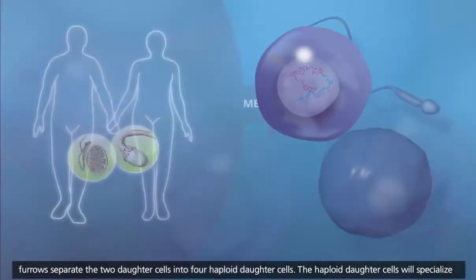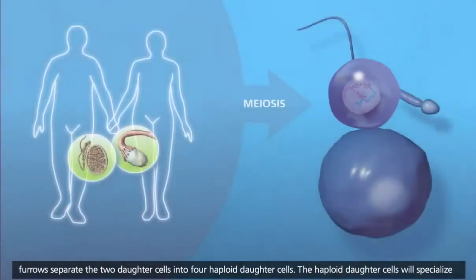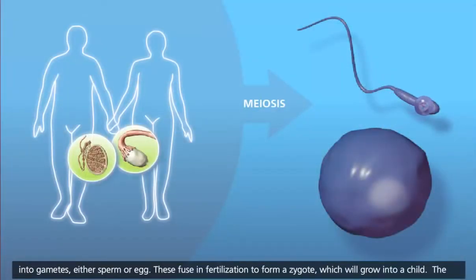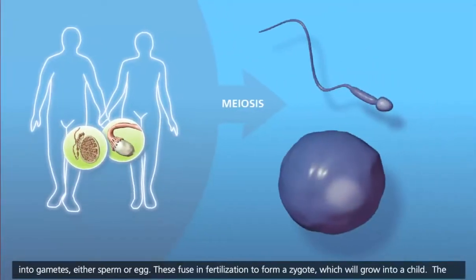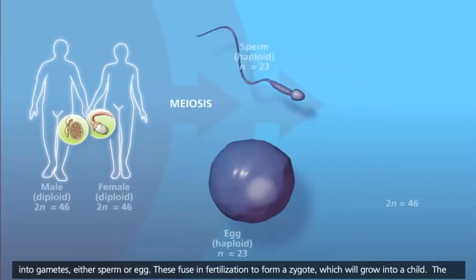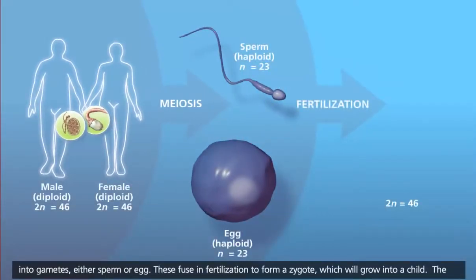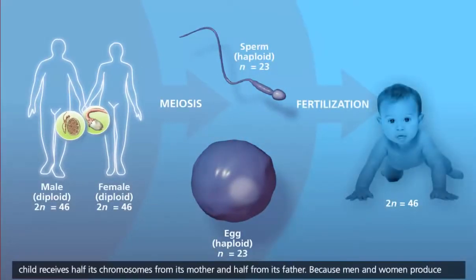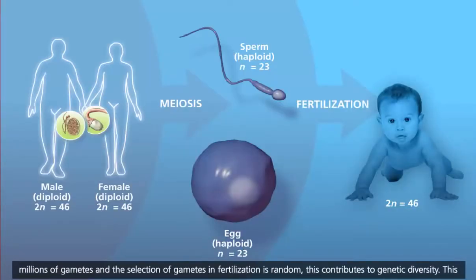The haploid daughter cells will specialize into gametes, either sperm or egg. These fuse in fertilization to form a zygote, which will grow into a child. The child receives half its chromosomes from its mother and half from its father. Because men and women produce millions of gametes and the selection of gametes in fertilization is random, this contributes to genetic diversity.